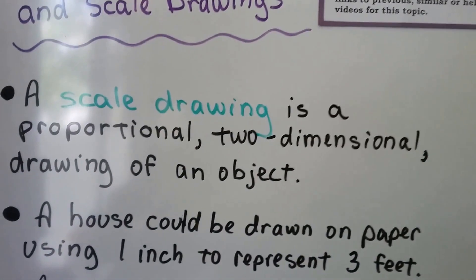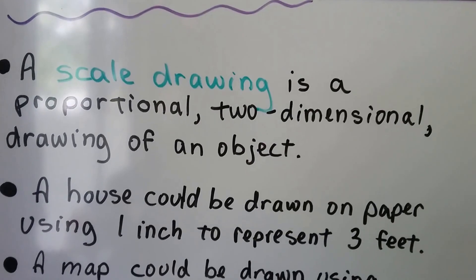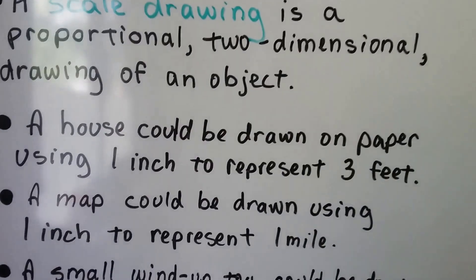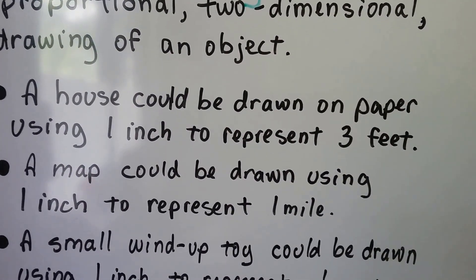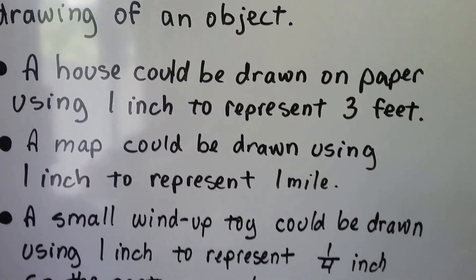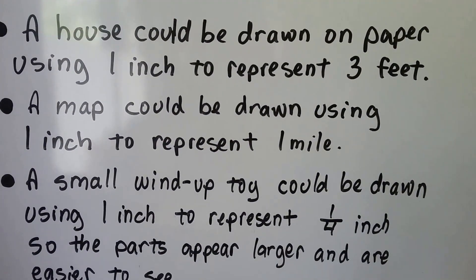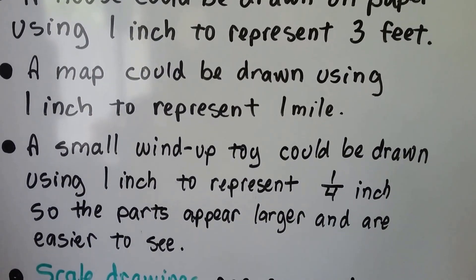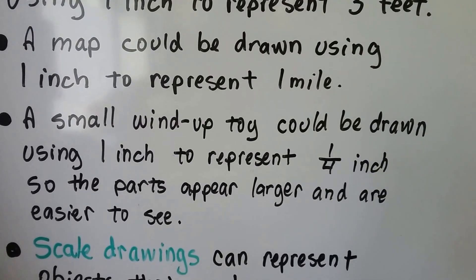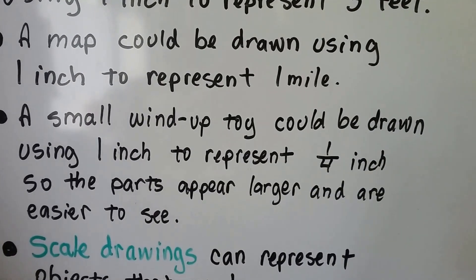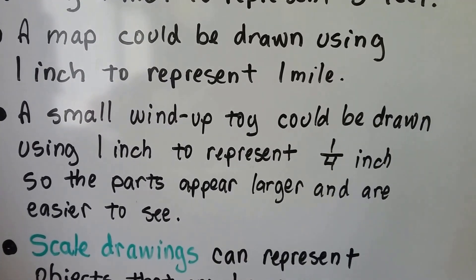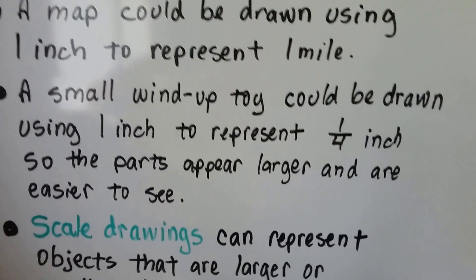A scale drawing is a proportional, two-dimensional drawing of an object. A house could be drawn on paper using one inch to represent three feet. A map could be drawn using one inch to represent one mile. Even a small wind-up toy could be drawn using one inch to represent a fourth of an inch, so the parts appear larger and are easier to see.